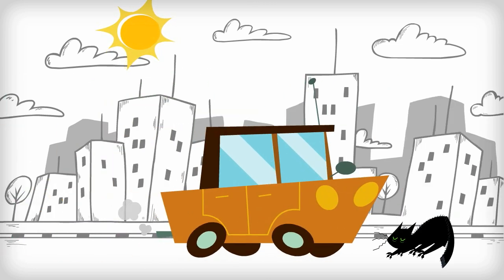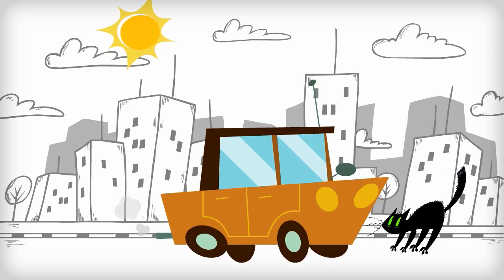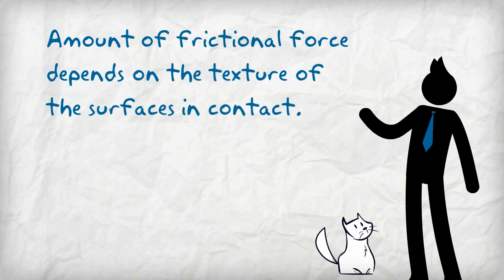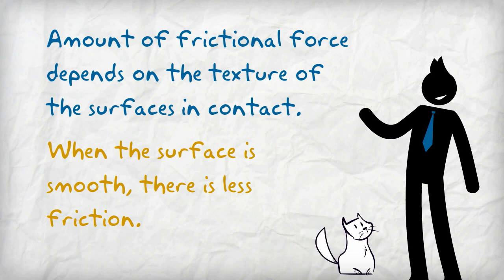Friction causes the car to brake in time to avoid accidents. The amount of friction depends on the texture of surfaces in contact. When the surface is smooth, there is less friction.